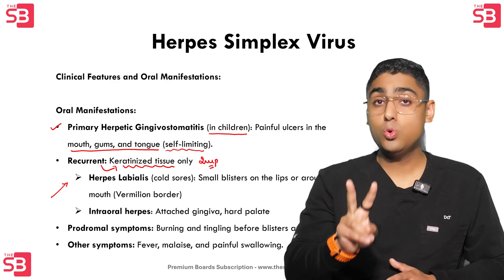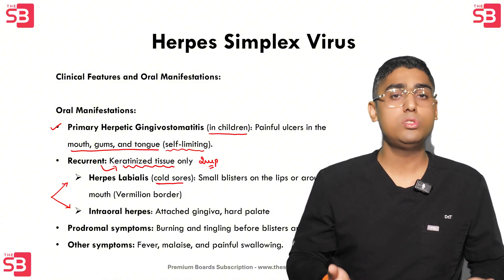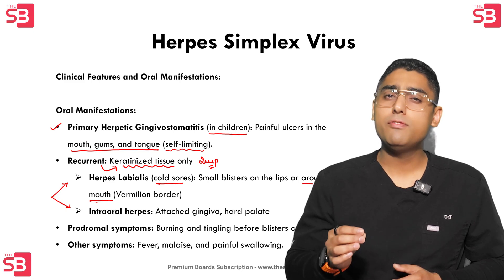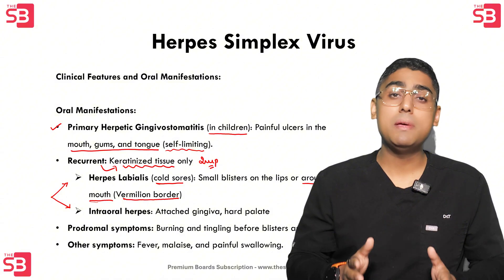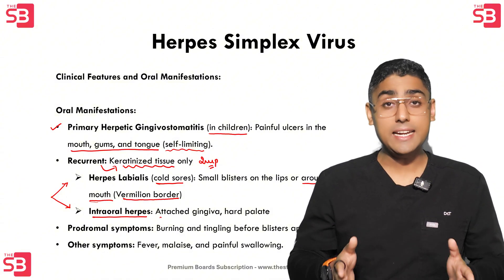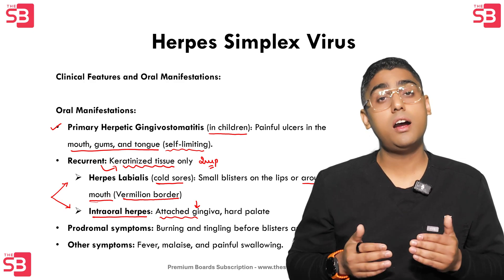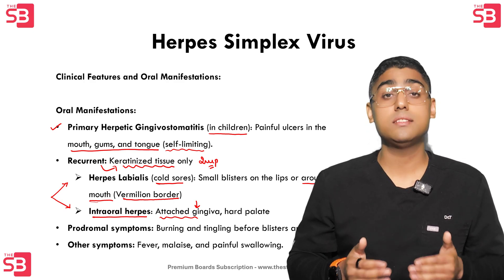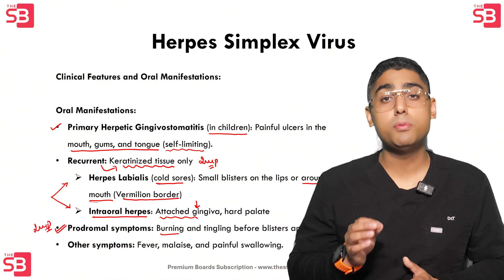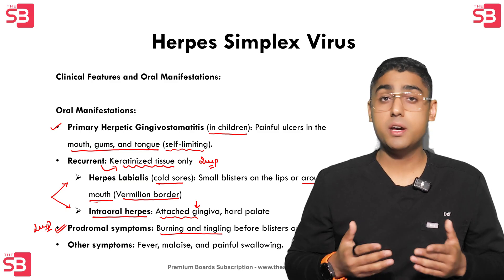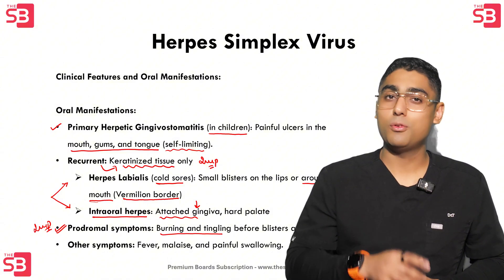Recurrent cases include two key presentations. First, herpes labialis, more commonly known as cold sores — these are small painful blisters that usually form on the lips around the mouth, especially near the vermilion border. Second, we have intraoral herpes, which affects the attached gingiva and the hard palate, both keratinized areas inside the mouth. Before these blisters appear, many patients experience prodromal symptoms like burning or tingling in the affected area, which is an early warning sign of the outbreak.